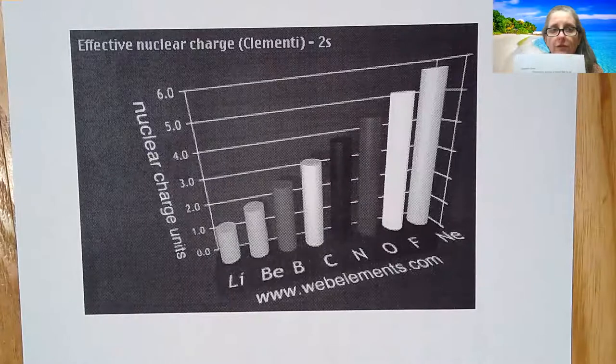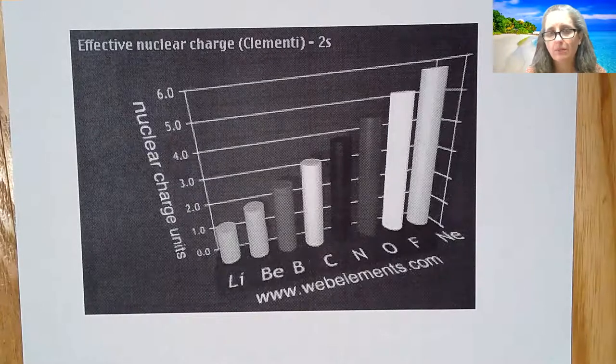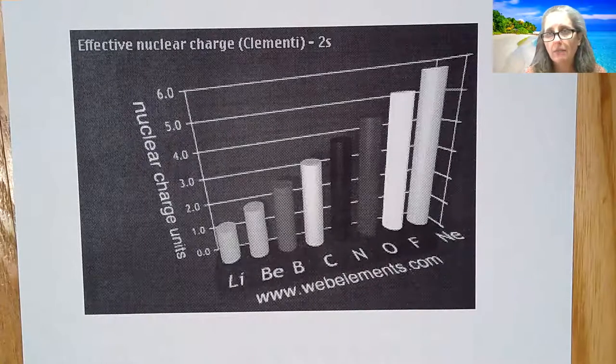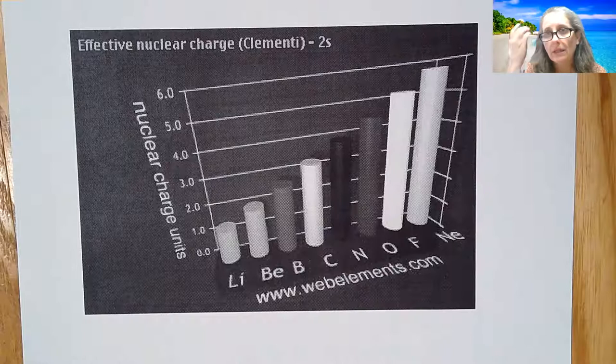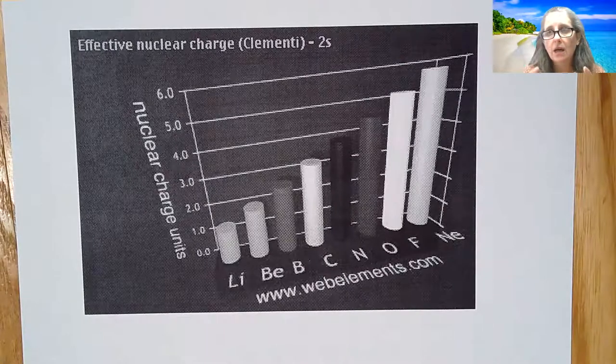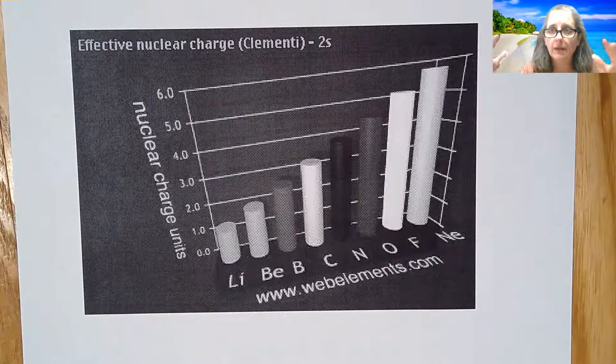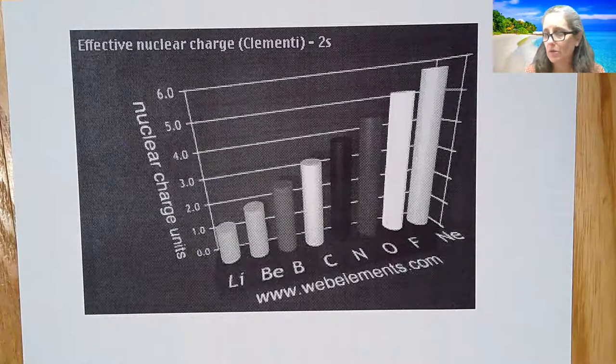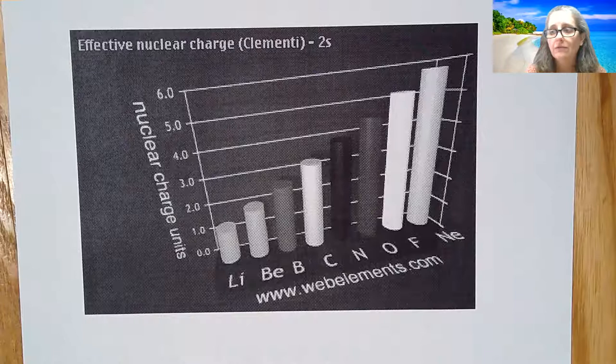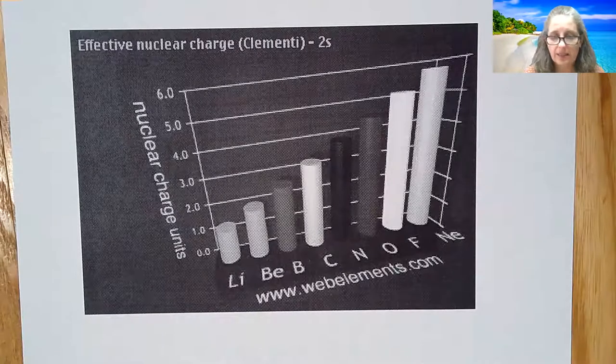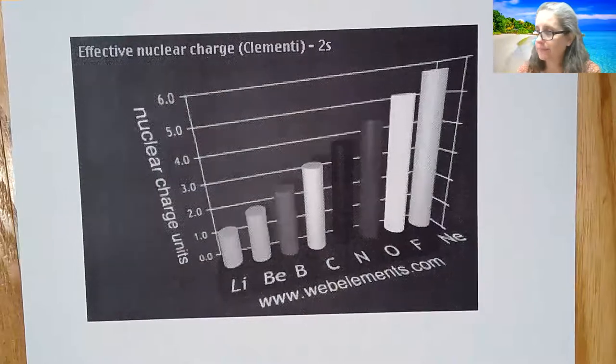But as you go from left to right in that second period, you will see that the effective nuclear charge keeps getting bigger and bigger again, because you have the S and the P shielding. And so then those outermost electrons don't feel those protons. So as you go from left to right, the effective nuclear charge increases. So therefore, the size decreases because of that.